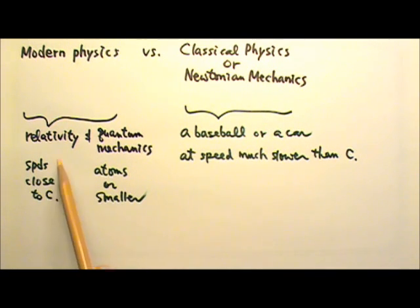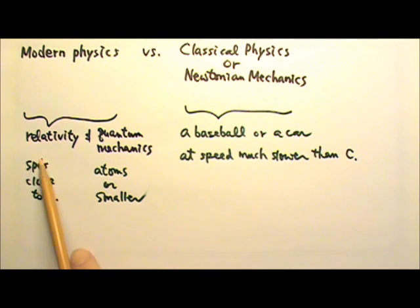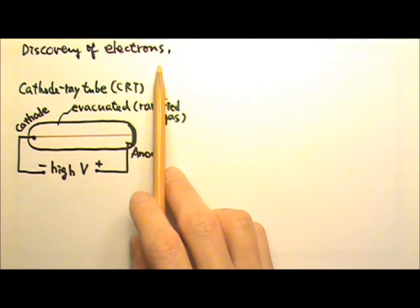Modern physics includes relativity and quantum mechanics, which deal with objects with speeds close to the speed of light and the very small such as atoms or even smaller particles. Relativity is not in the AP Physics B curriculum, so we will start with the discovery of electrons.